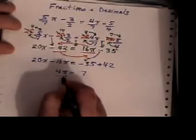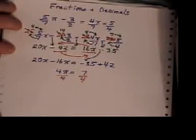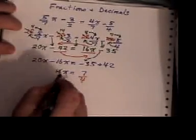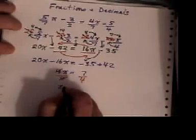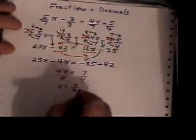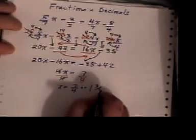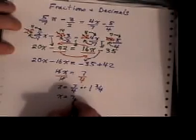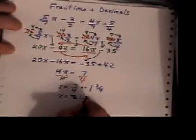You now take both sides and divide them by 4. And this 4 cancels this 4. So you're left with your final answer: x is 7 over 4, or 1 and 3 quarters, or if you want to use your calculator, you'll get it as 1.75.